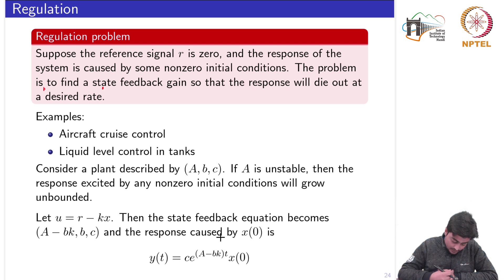First of all we need to make the closed loop stable which we have done so far by using this control signal as R minus k times x where k is the feedback controller which we need to design such that the response caused by the non-zero initial condition is given by this.